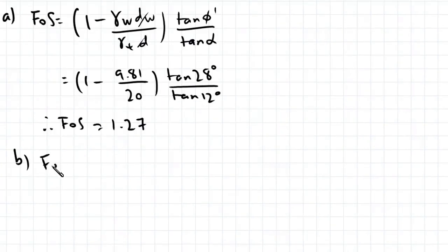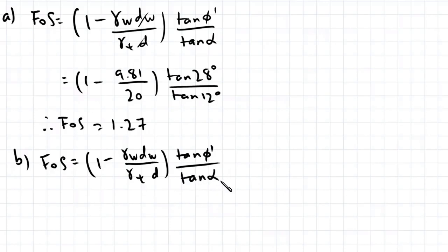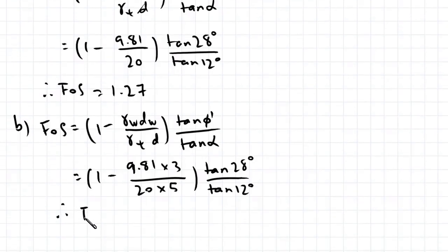So writing the same equation, factor of safety equals to 1 minus gamma w multiplied by d w over gamma t multiplied by d, multiplied by tan phi dash divided by tan alpha. So that's 1 minus 9.81 multiplied by 3 divided by 20 divided by 5 multiplied by tan 28 degrees divided by tan 12 degrees. And this gives us a factor of safety of 1.77.